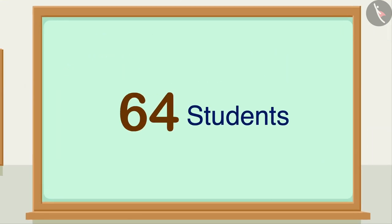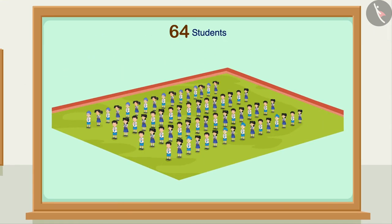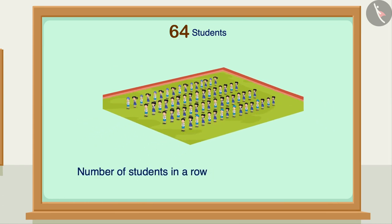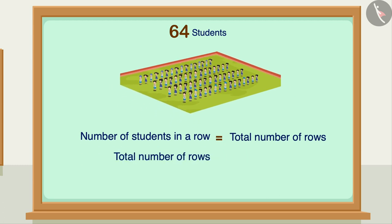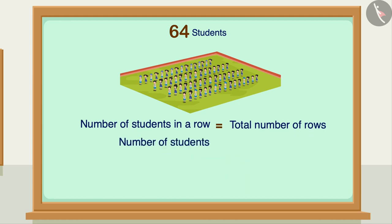These 64 students have been selected for a parade in the school. In the parade they have to walk in rows so that each row has as many students as the total number of rows. That is, if the total number of rows is n, then the number of students in each row should also be n.